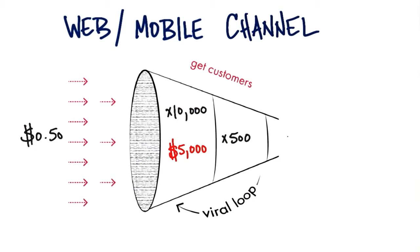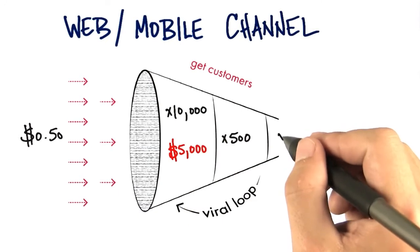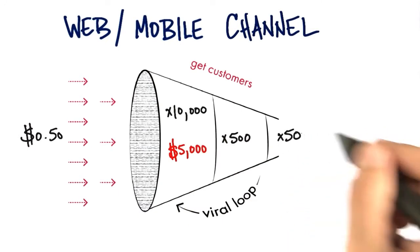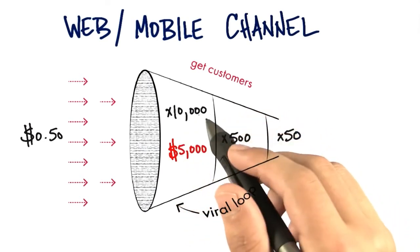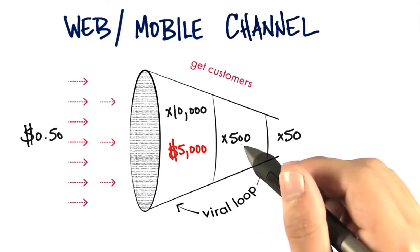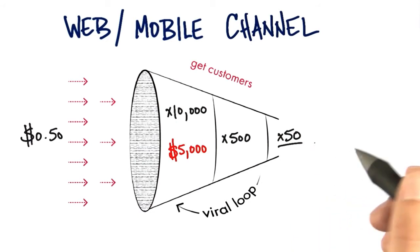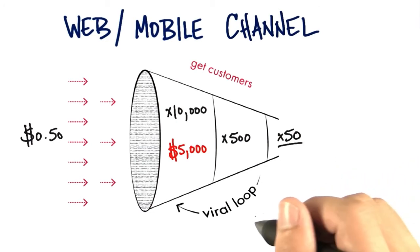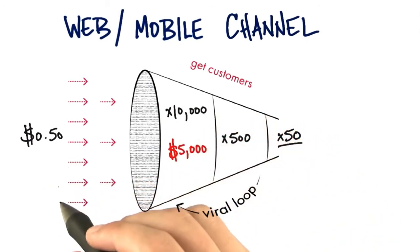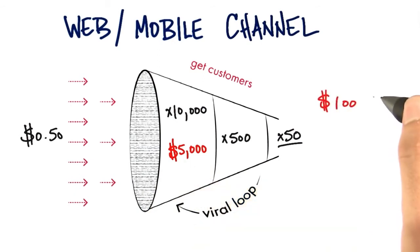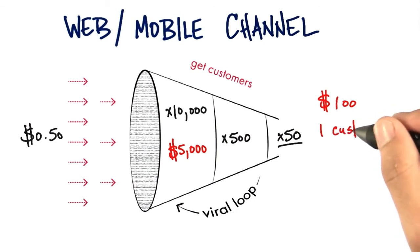But the goal is not to just have them use a freemium product — the goal is to have them pay for it. Assume 10% of those now actually pay. So I started with 10,000 people who came to my site, spent $5,000, 500 people took a trial, and only 50 actually paid for the full version. If we do the math, it cost me $100 to acquire one paying customer.